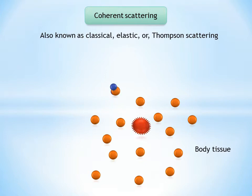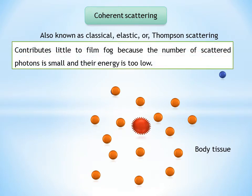Coherent scattering contributes little to film fog because the number of scattered photons is small and the energy is too low for many of them to reach the film or sensor.